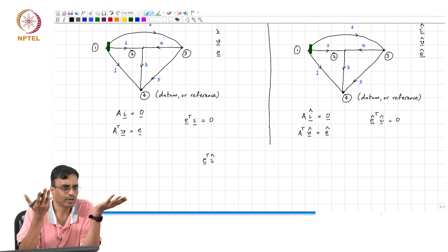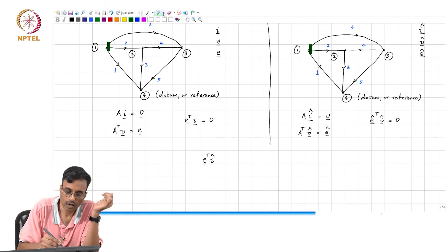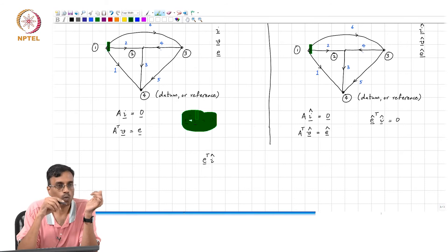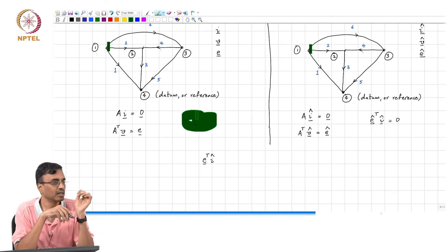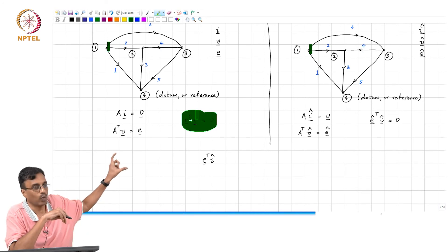So, scalar and it also has dimensions of power. The only difference between what we did here, and what we are doing now, is that to compute within quotes, the branch power, we are taking the voltage in one branch and the current in another network.